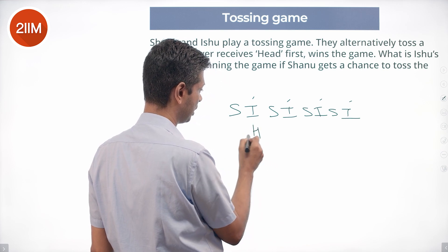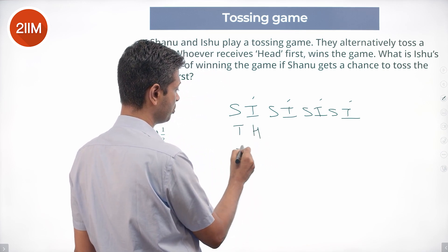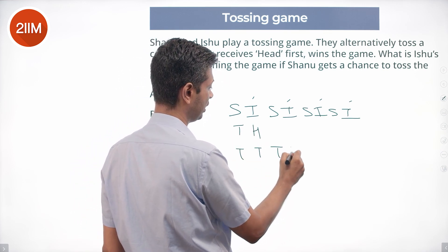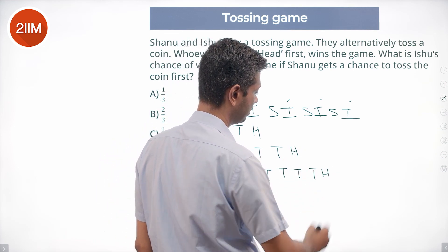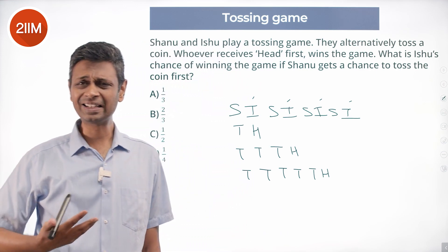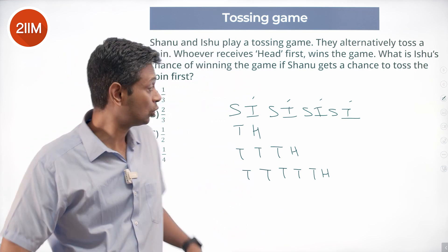And this has to be a head. That means there should have been a tail, or should be tail tail tail head, tail tail tail tail head, and so on.